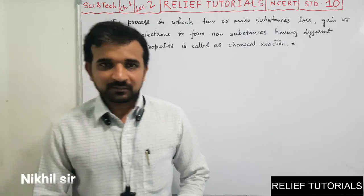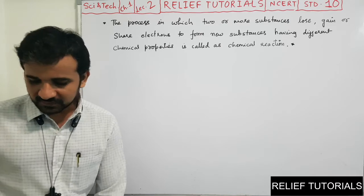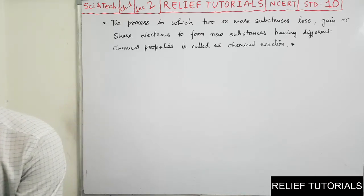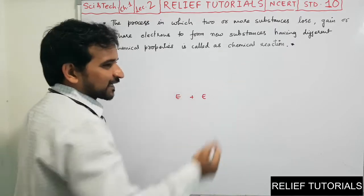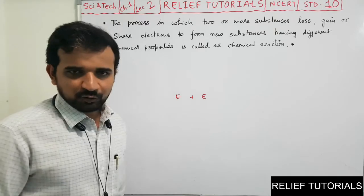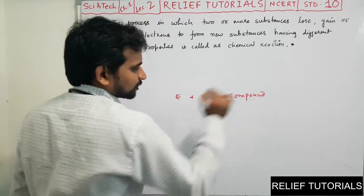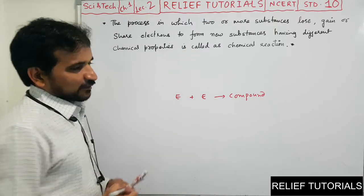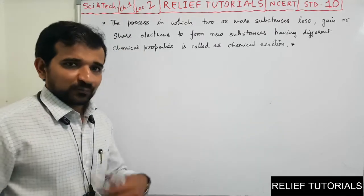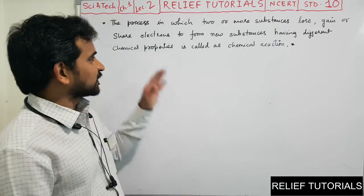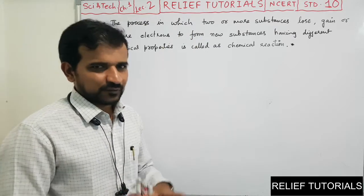Good morning students, welcome again to the Revitable Health Classes. In the last lecture we discussed how chemical reduction occurs — one of the elements loses, gains, or shares electrons with each other and they form a new substance called a compound. That process of losing, gaining, or sharing electrons is called a chemical reaction. The new substance obtained at the end of the reaction will have different chemical properties than the reacting substances.